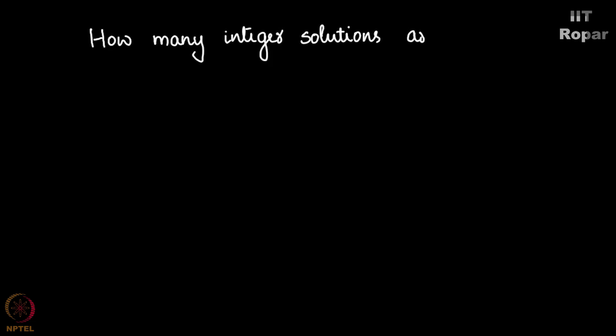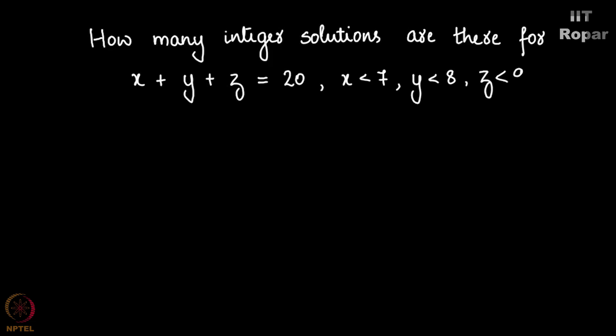How many integer solutions are there for x plus y plus z equals 20, where x is less than 7, y is less than 8, and z is less than 9? All three of them are strictly less than these values.